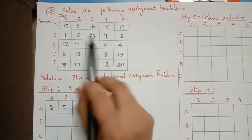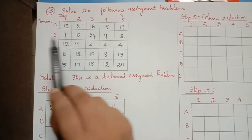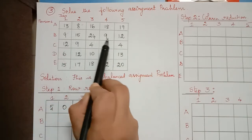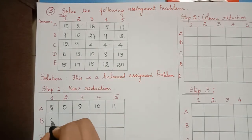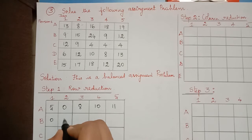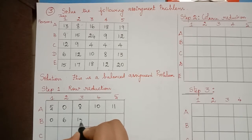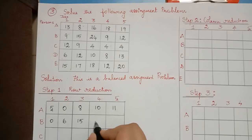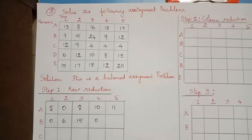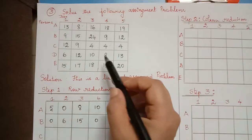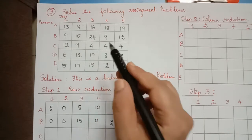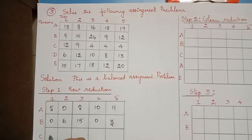In the second row the minimum element is 9, so we have to subtract 9 from the other elements of this row. 9 minus 9 is 0, 15 minus 9 is 6, 24 minus 9 is 15, 9 minus 9 is 0, and 12 minus 9 is 3. Similarly in the third row the minimum element is 4, so 12 minus 4 is 8.